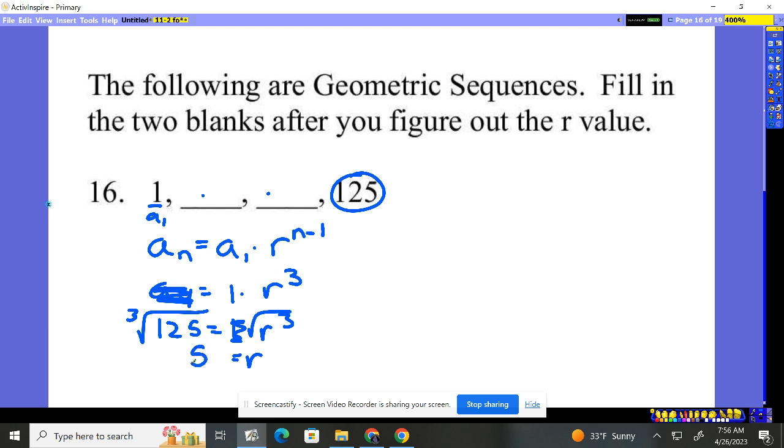We're multiplying by 5 each time. So, if I start at 1, I multiply by 5, I get 5. Take 5, multiply by 5, you got 25. 25 times 5 gives you what? 125. Boom. We have solved the problem.